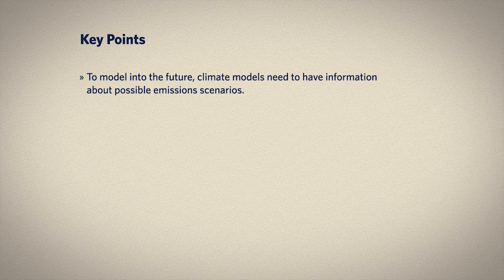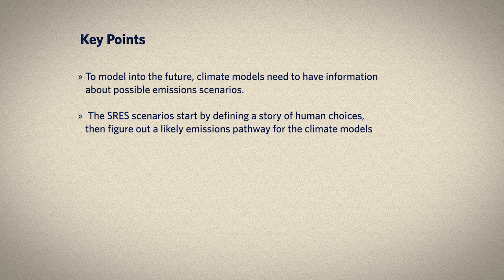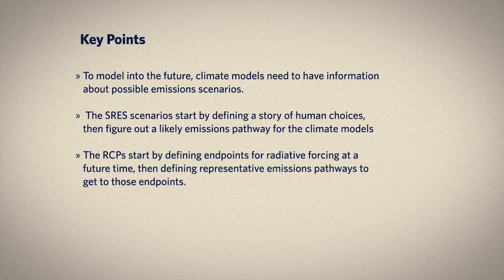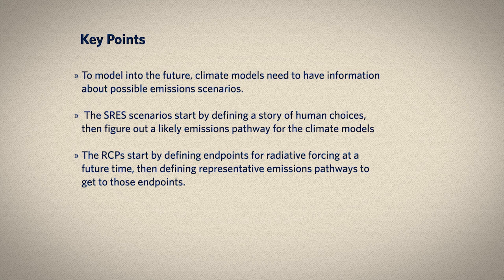To summarize: we have a desire to peer into the future, and climate models can help us do that, but they need information about possible pathways for future emissions. The SRES families of scenarios start by telling a story about future human activities and what our societies might look like, then estimate what those scenarios would mean for greenhouse gas emissions, and those numbers are used in climate models. The Representative Concentration Pathway approach is different — it first defines endpoints in terms of radiative forcing above pre-industrial times in 2100, then works backward to define representative pathways that lead there, which are also fed into climate models.